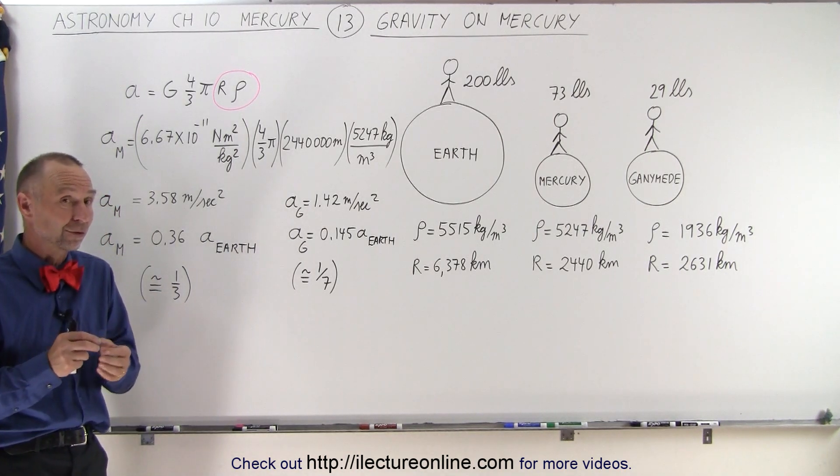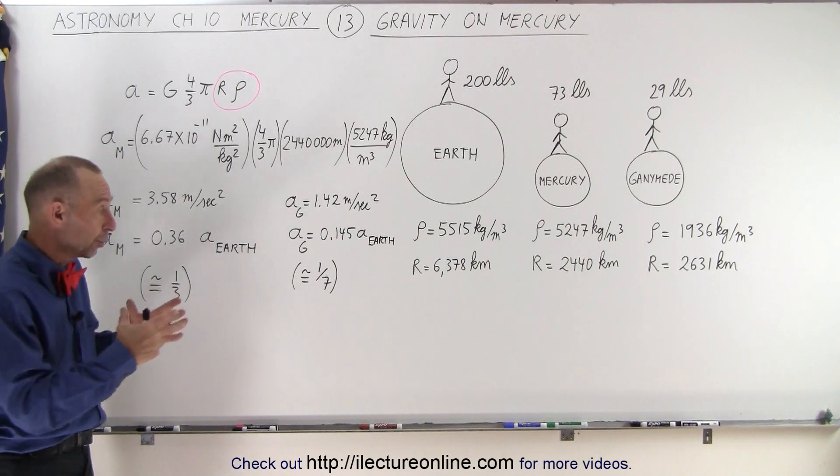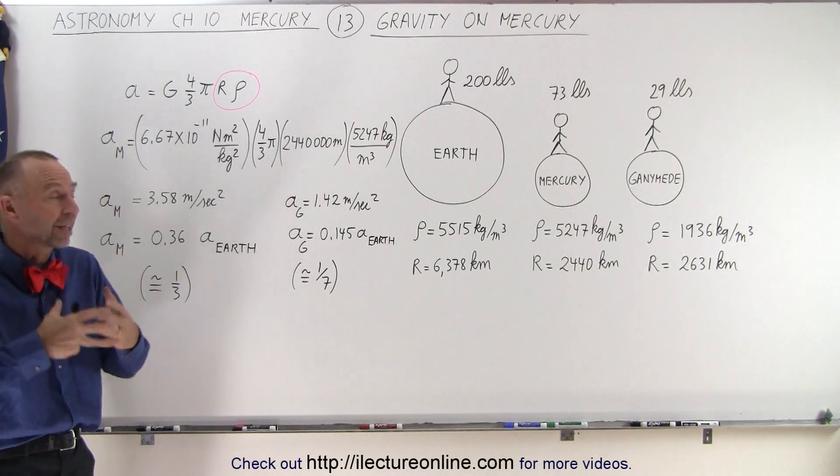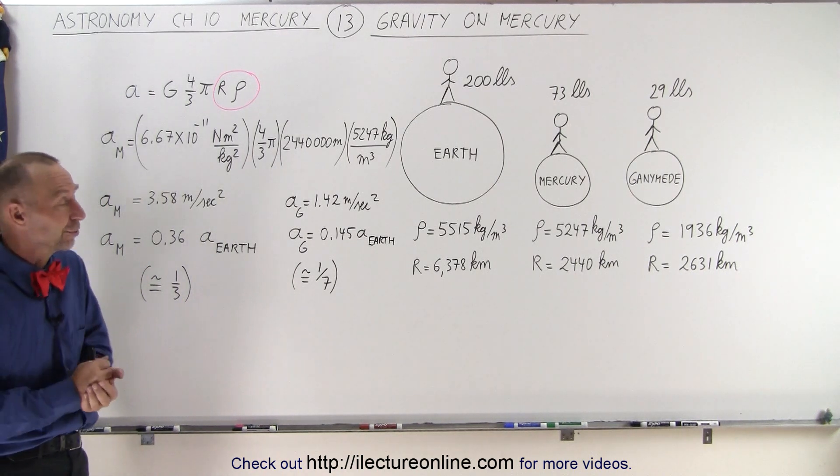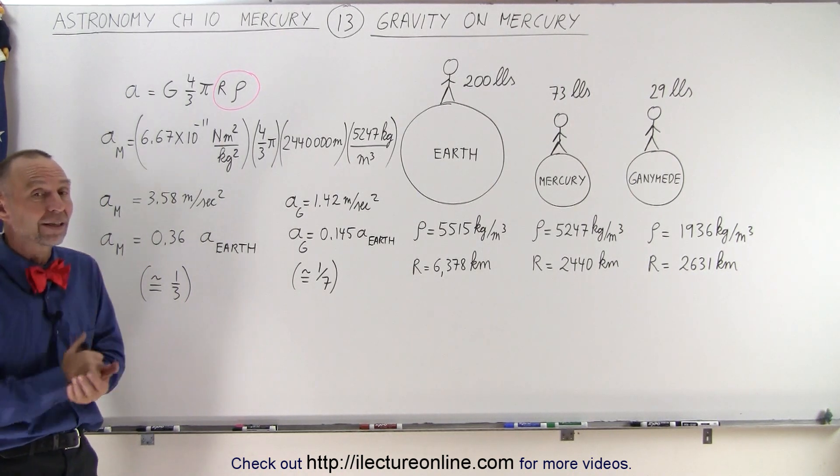So that means the gravitational force on the Moon, the Earth's Moon, which is much smaller than Ganymede, is greater than the gravitational force on Ganymede, which means that the density of the Moon must be greater than the density of Ganymede. And indeed, it is.